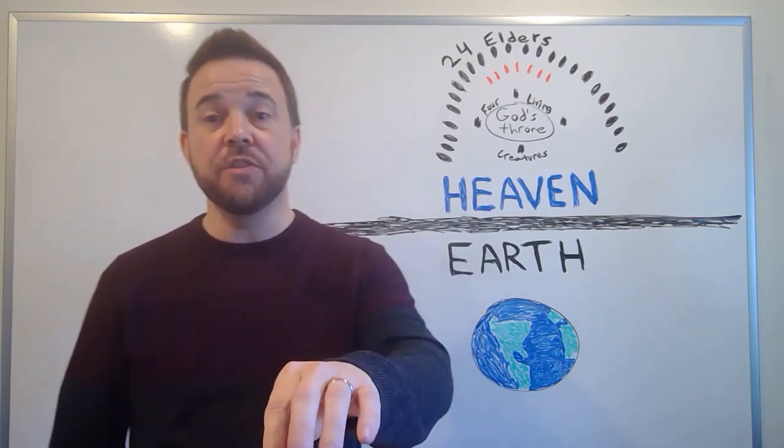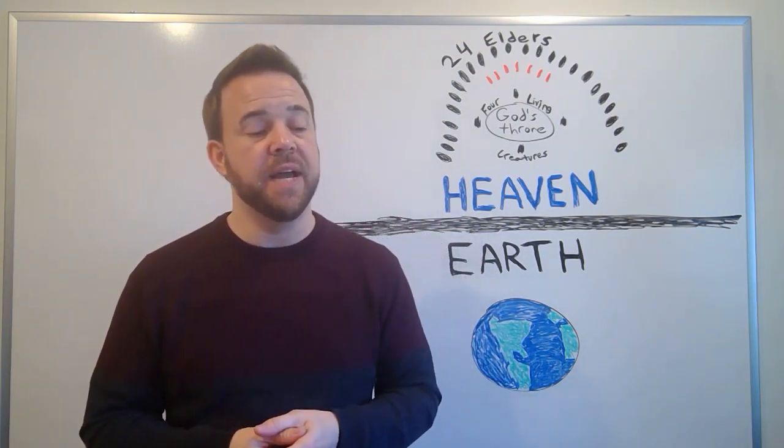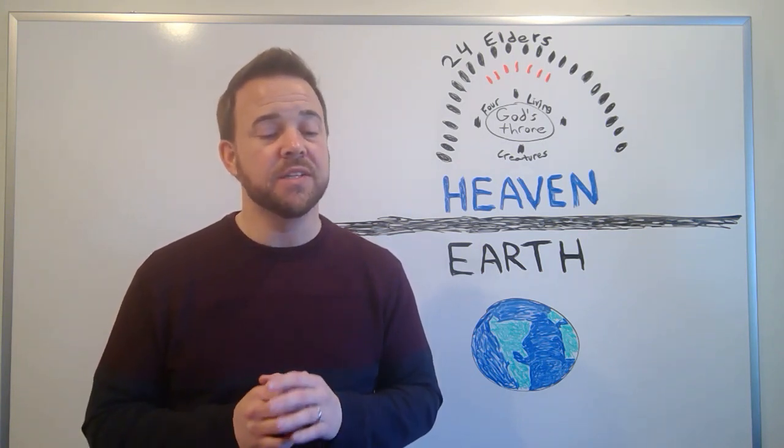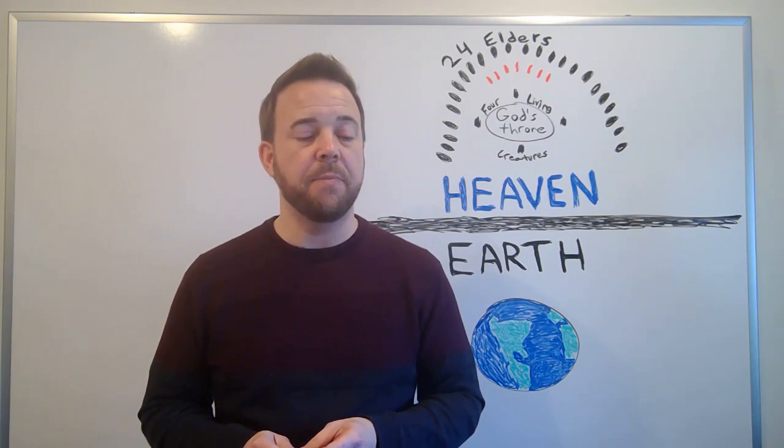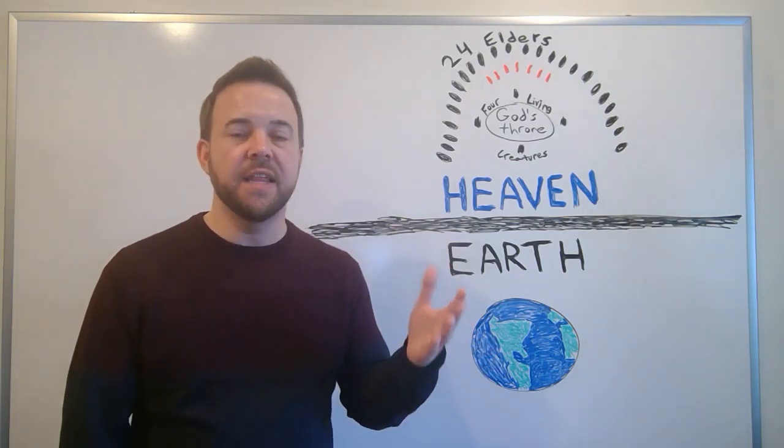Then one of the twenty-four elders says to John, these are they who have come out of the great ordeal. The churches that John is writing to have been facing a great ordeal. The elder says, they have washed their robes and made them white in the blood of the Lamb. For this reason, they are before the throne of God and worship God day and night within God's temple. And the one who is seated on the throne will shelter them. They will hunger no more and thirst no more. The sun will not strike them nor any scorching heat. For the Lamb at the center of the throne will be their shepherd. He will guide them to springs of the water of life. And God will wipe away every tear from their eyes. God's people are safe. They are loved and cared for. They are sheltered. They lack for nothing. They are victorious.